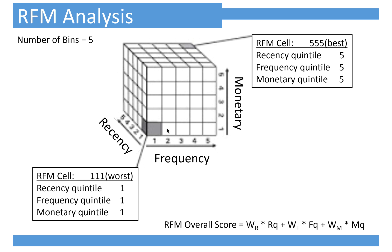The bottom cell is 1-1-1. It means that in recency, frequency, and monetary — across all three dimensions — these customers are the worst customers. We can use the RFM category and weight together to calculate the RFM overall score.